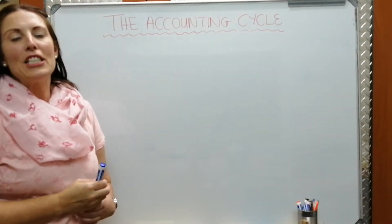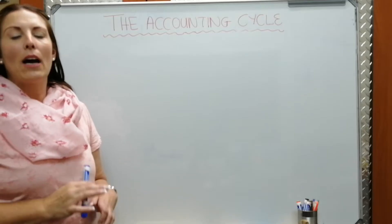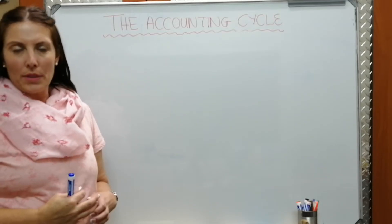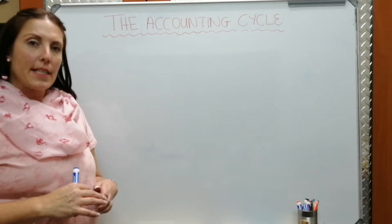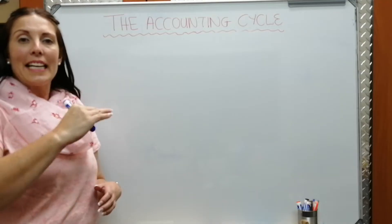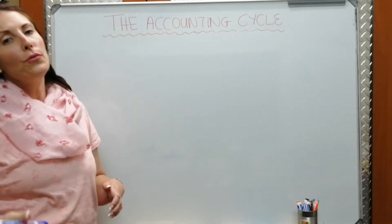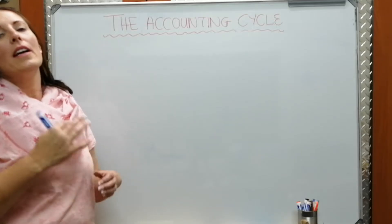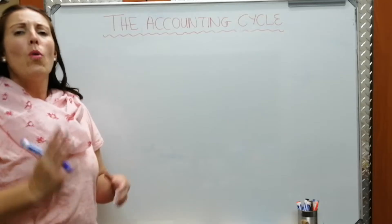In this unit we're going to talk about the accounting cycle in any business. The accounting cycle is basically a process where we show where a transaction originally takes place and how it is moved through different processes until it finally is recorded in the financial statements of the business.